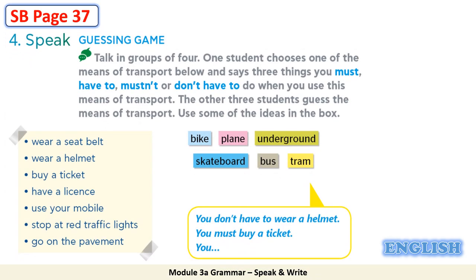Let's go back to your student's book page 37, go to part four. Read the given instructions: 4. Speak — guessing game. Talk in groups of four. One student chooses one of the means of transport below and says three things you must, have to, mustn't, or don't have to do when you use it. The other three students guess the means of transport. Means of transport: bike, plane, underground, skateboard, bus, tram.